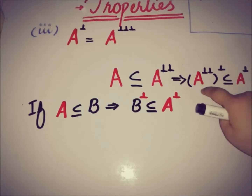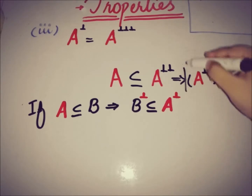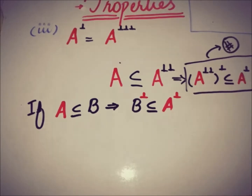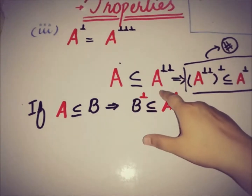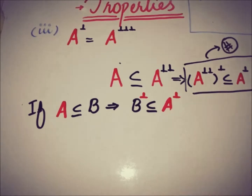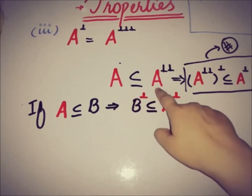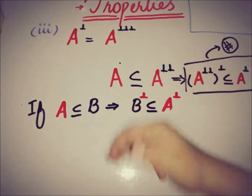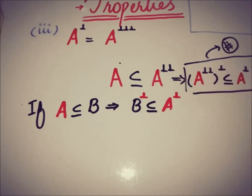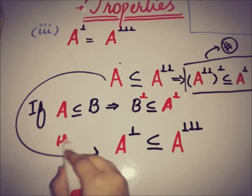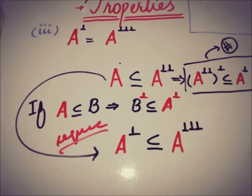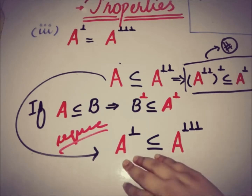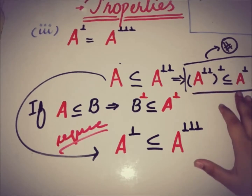So the annihilator of the double annihilator is a subset of A annihilator. Now, looking at the sequence again: A is a subset of A double annihilator, so A annihilator must be a subset of A triple annihilator, following the same sequence from the first property. So A annihilator ⊆ A triple annihilator, and also A triple annihilator ⊆ A annihilator.